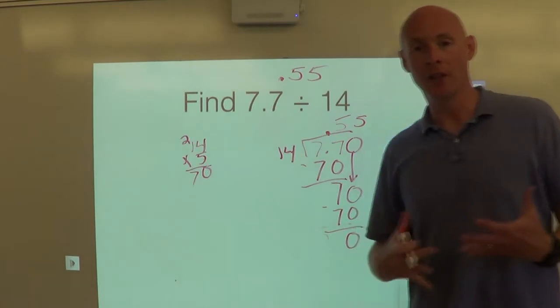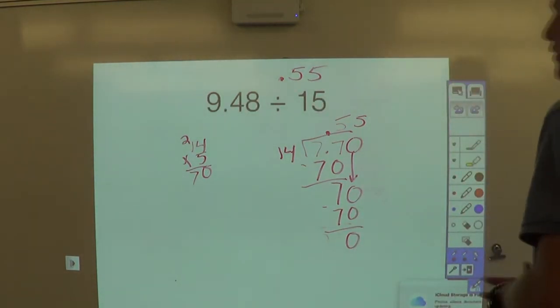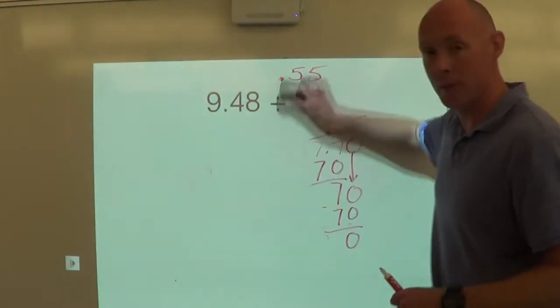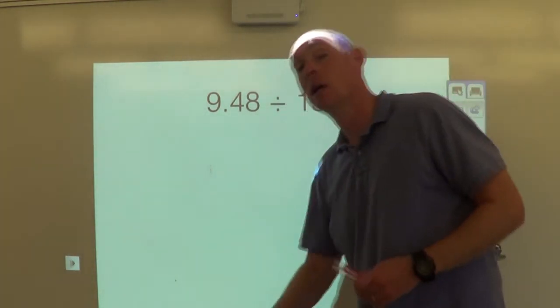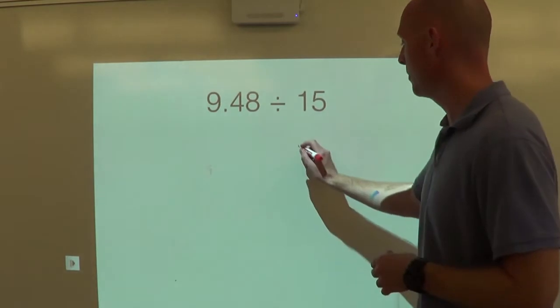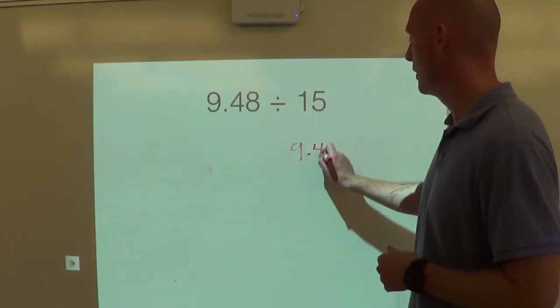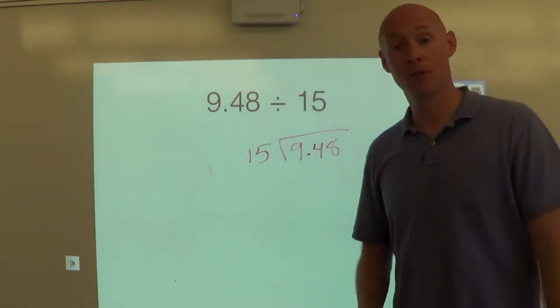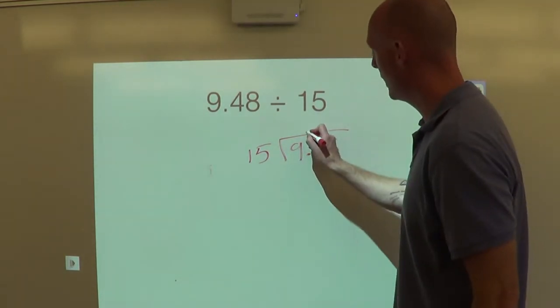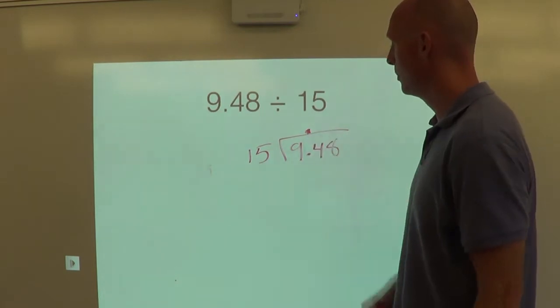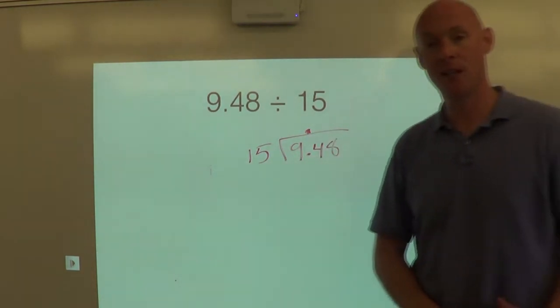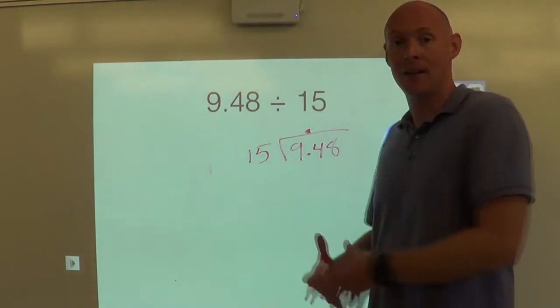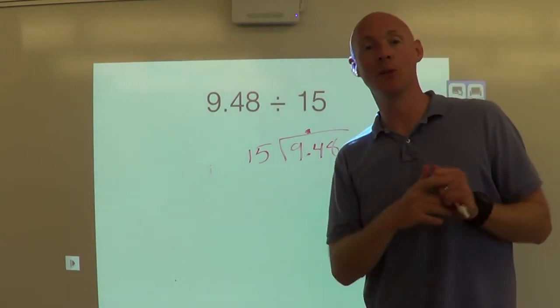Okay. This next one I want you to try on your own. This is 9.48 divided by 15. You know the three steps. I'll do step one for you. Step one, set up the math problem. 9.48 divided by 15. All right, I'll even do step two for you. Step two, take that decimal, bring it up to the top. Boom, boom, boom. So now you're essentially saying, how many times does 15 go into 948? I want you to pause the video and try to answer that. We'll go over it in class tomorrow because I want to get to a word problem.